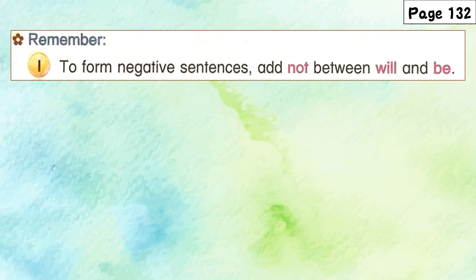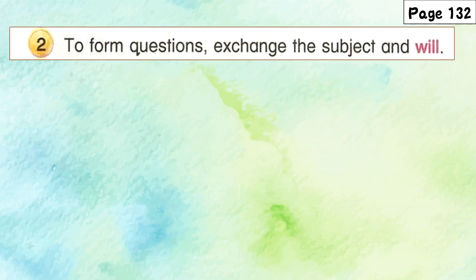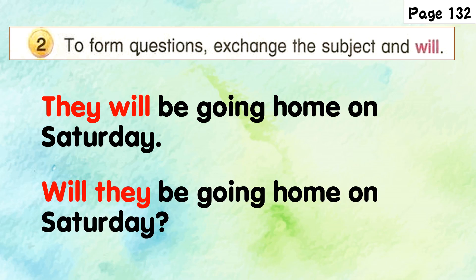To form negative sentences, add 'not' between 'will' and 'be': He will not be coming at 1 p.m. tomorrow. To form questions, exchange the subject and 'will': They will be going home on Saturday → Will they be going home on Saturday?